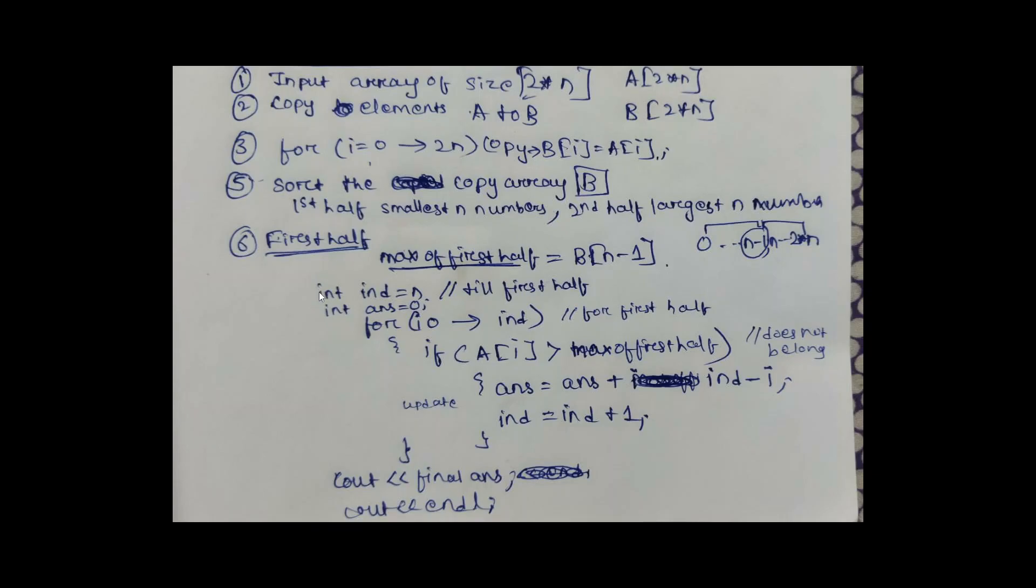We have to keep track of the index till the first half, that is N. N is our index that will signify the first half, and we have to keep on updating this index. We declare an answer variable to store this answer.